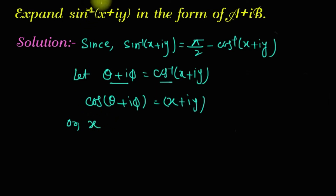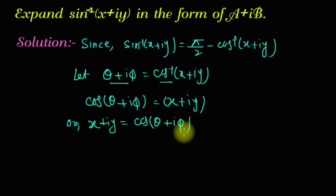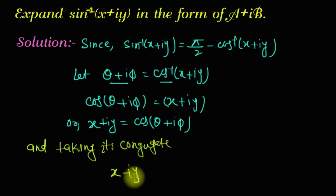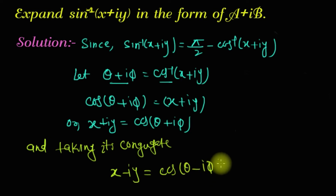x+iy = cos(θ+iφ)। अब हम इसका conjugate लेंगे। Conjugate में क्या होता है? अगर plus है तो सिर्फ उसका sign change कर लेते हैं — minus हो जाएगा। तो x−iy = cos(θ−iφ)। सिर्फ sign change होता है, बाकि सब उसी तरह रहता है।